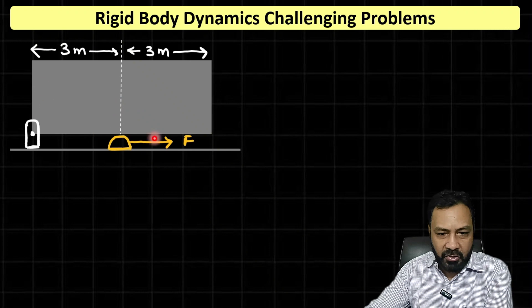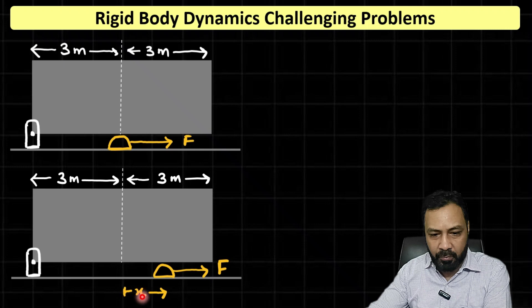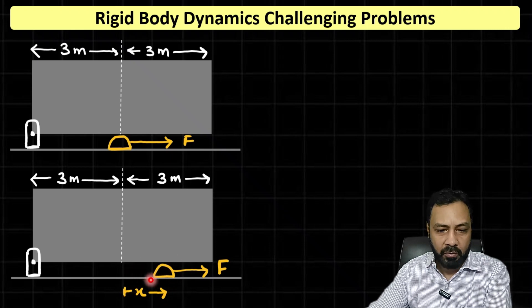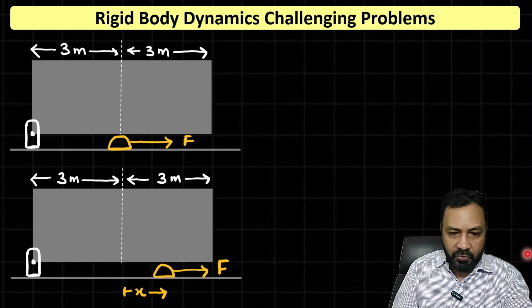So net torque about any point and net force is always zero. This is the initial moment, and let's see after some time when this peg has moved a little bit distance x. At this moment, let me first draw the FBD of the smaller block and see what forces are acting on it.